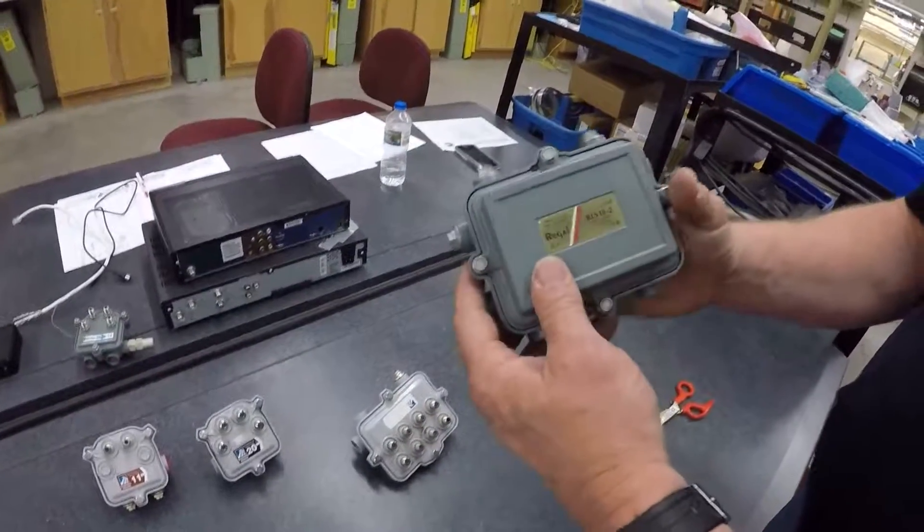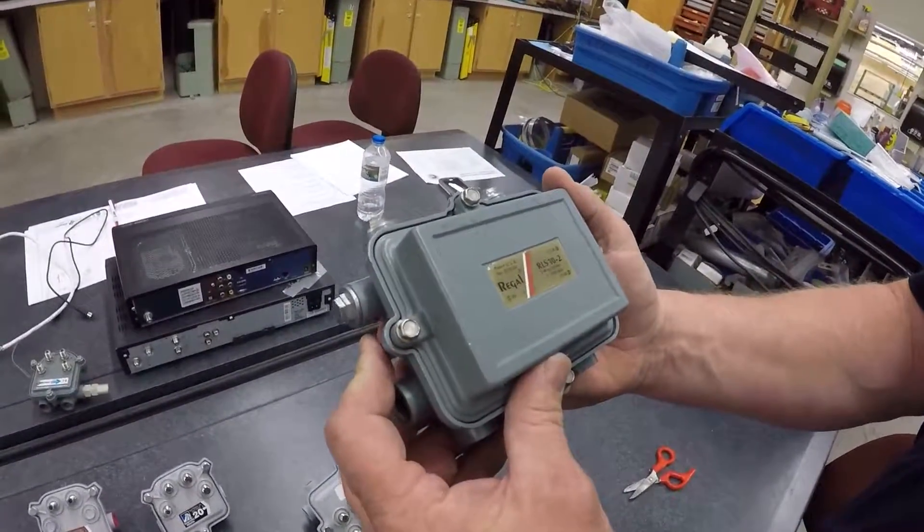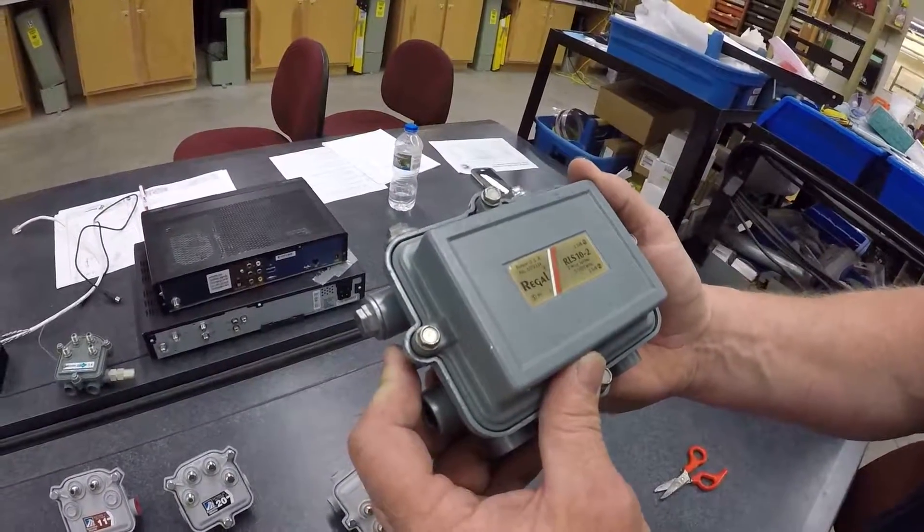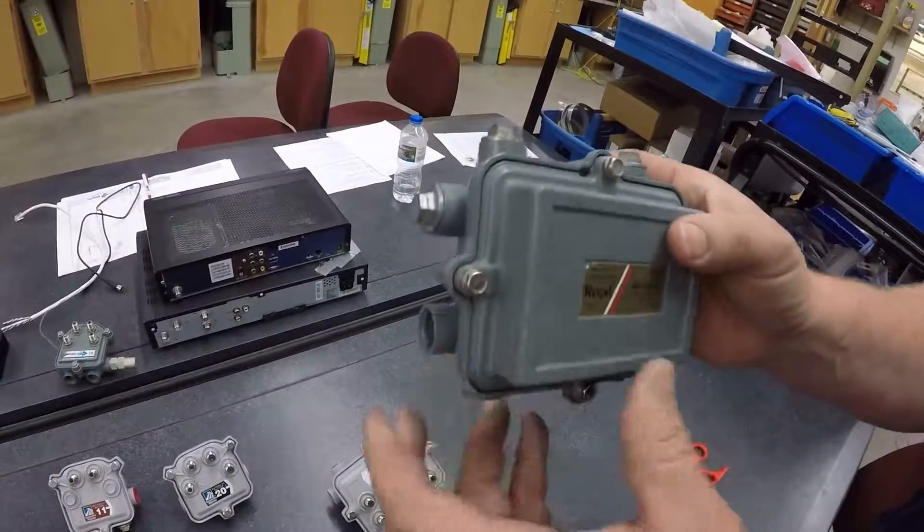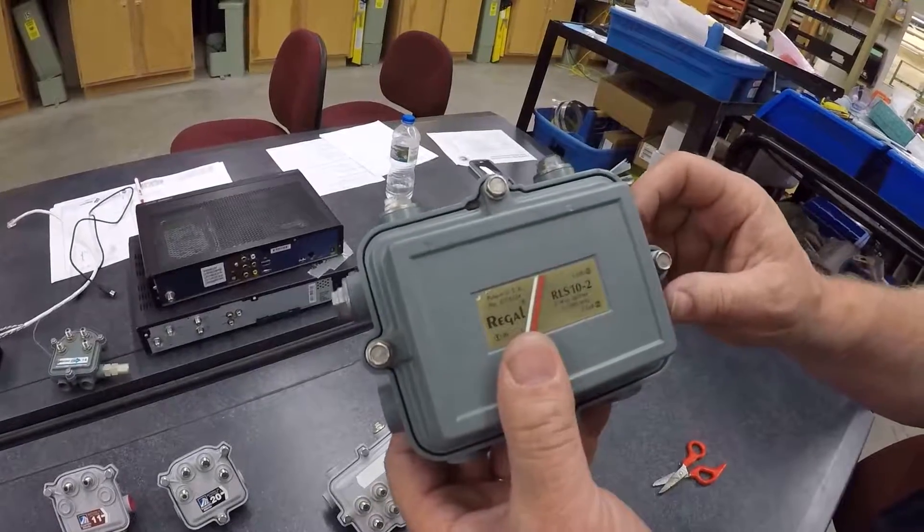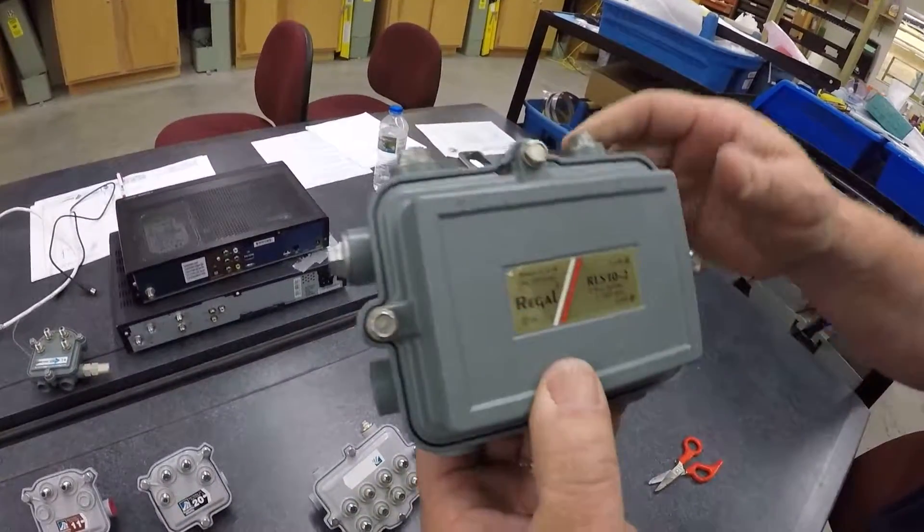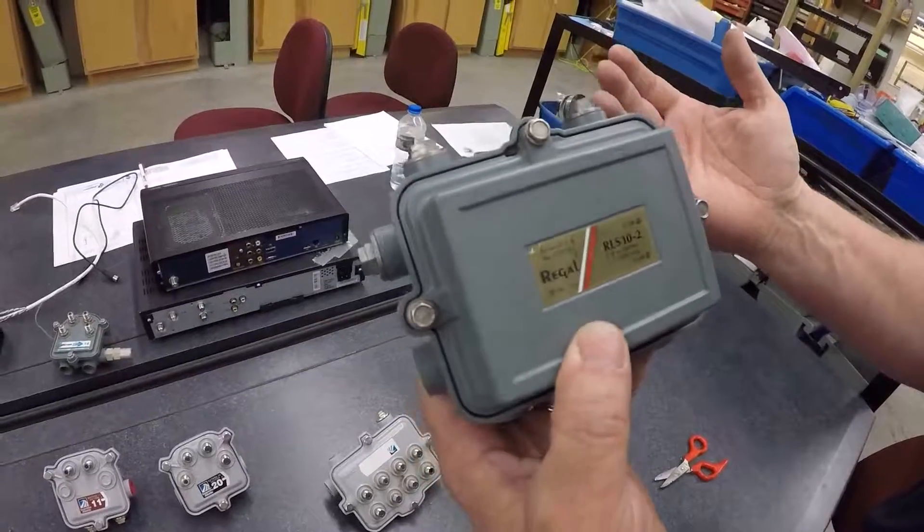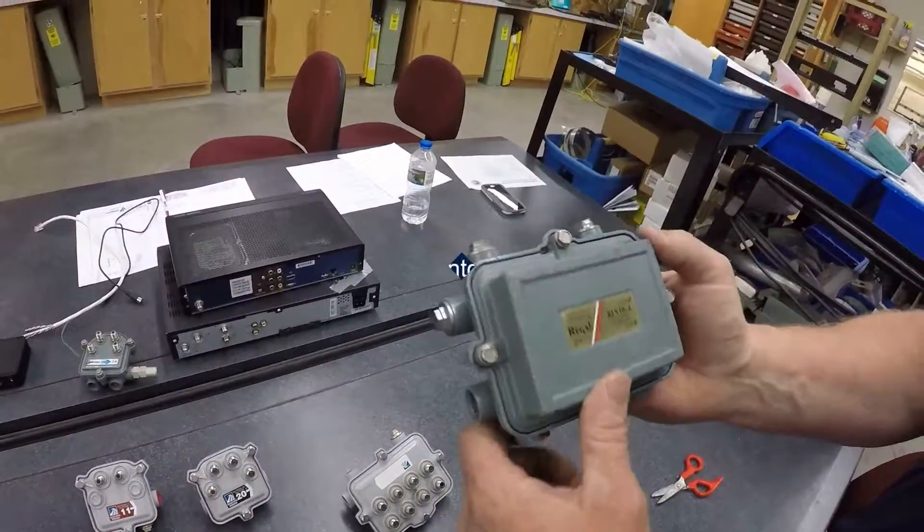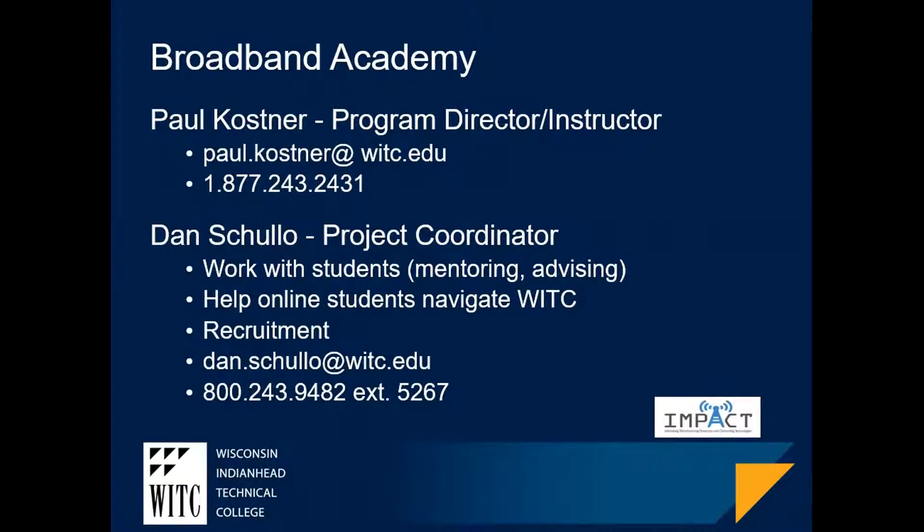This last device that I'm going to talk about is the two-way splitter. So if you have a neighborhood where you don't have any taps or any drops, you will actually split the signal so that you can go different directions to cover your network.